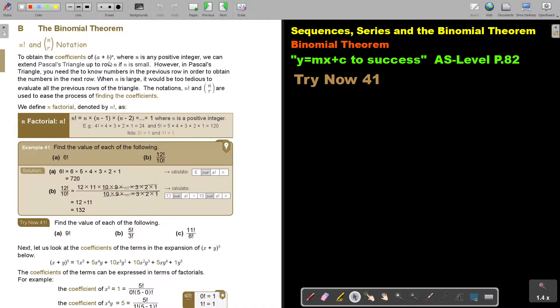To obtain the coefficients of a plus b to the power n, where n is any positive integer, we can extend Pascal's Triangle up to row n if n is small. However, in Pascal's Triangle, you need to know the numbers in the previous row in order to obtain the numbers in the next row. When n is large, it would be too tedious to evaluate all the previous rows of the Triangle. The notation n factorial and n over r are used to ease the process of finding the coefficients. We define n factorial denoted by n with an exclamation mark.